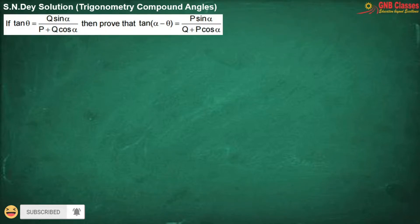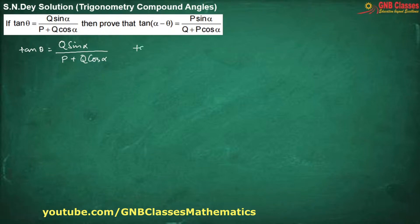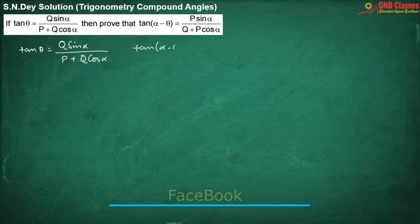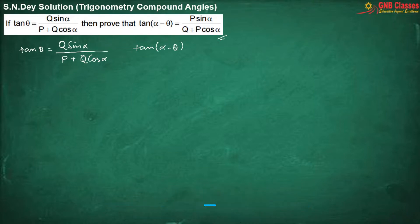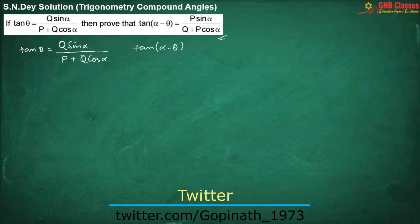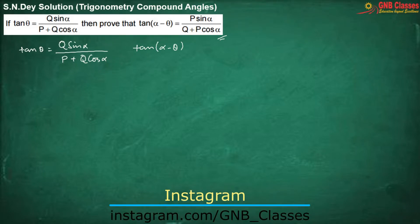Here they have said that tan theta equals a given expression, and we have to prove that tan alpha minus theta equals the given expression. If you observe, you will find that in the proof part on the right hand side, there is no theta. So we have to replace theta in terms of alpha, and we will definitely get the right hand side.